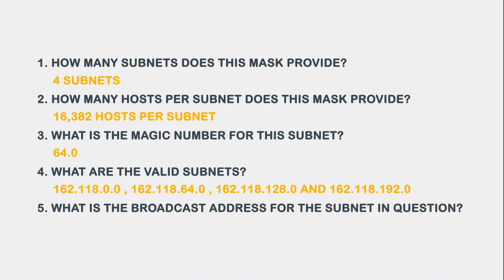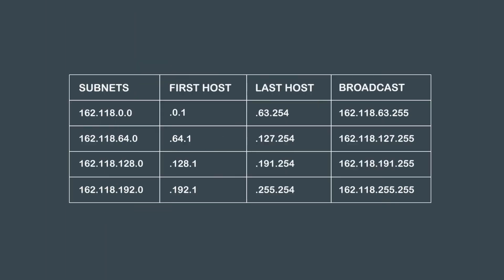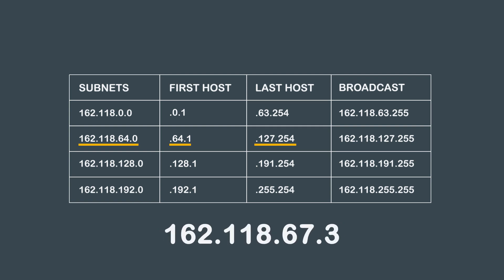Question 5 asks: What is the broadcast address for the subnet in question? If we look at the 162.118.64.0 subnet from our chart, all the hosts are between 162.118.64.1 and 162.118.127.254. Our IP address for this problem is 162.118.67.3, and we can now see that it falls within this range. Based on our chart, the broadcast address and the answer to question 5 is 162.118.127.255.